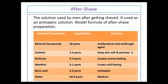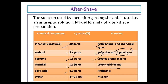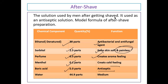There is a component of aftershave lotion — aftershave is the solution used by men after shaving. It is used as an antiseptic solution. Different types of chemicals are used for preparing aftershave lotion: denatured ethanol, 30 parts from 100, acts as an antibacterial and antifungal agent; sorbitol, 2.5 parts, keeps skin soft and painless; perfume, 0.1 part, creates the aroma feeling; menthol, 0.1 part, creates a cold feeling; boric acid, 2.0 parts, used as antiseptic; and water, 44.4 parts, used as a solvent or medium.